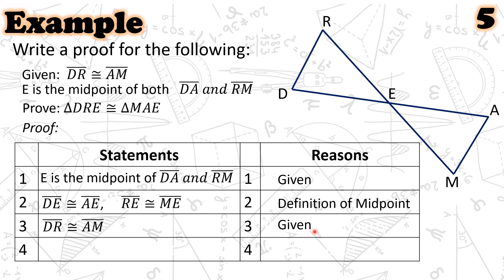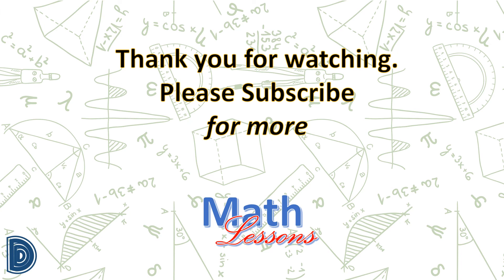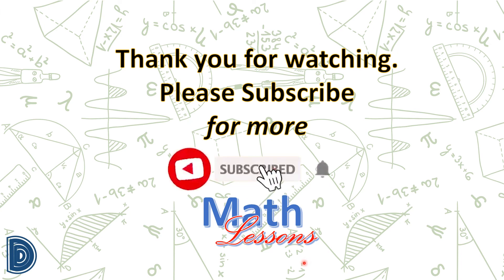Statement number 3, by the way, is given. So we say that triangle DRE is congruent to triangle MAE by the SSS postulate. That will be all. Thank you for watching. Please subscribe for more math lessons.